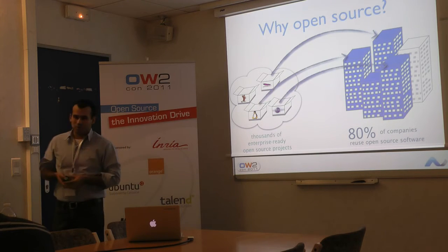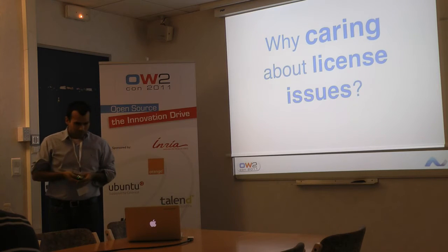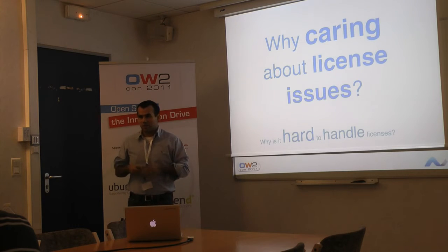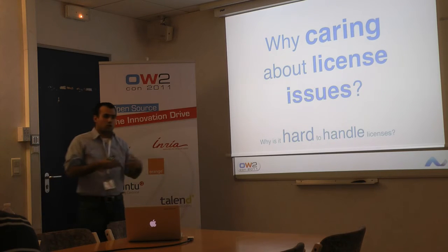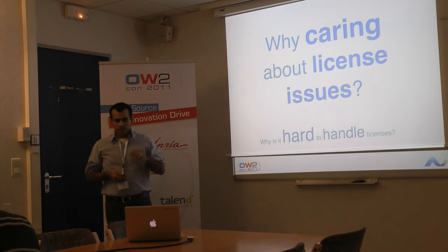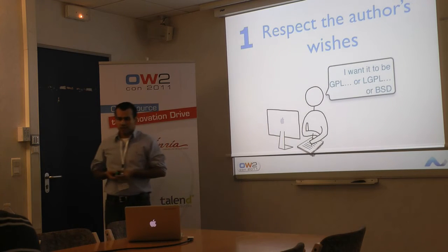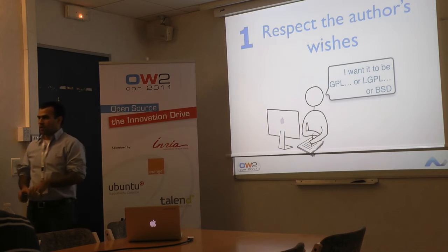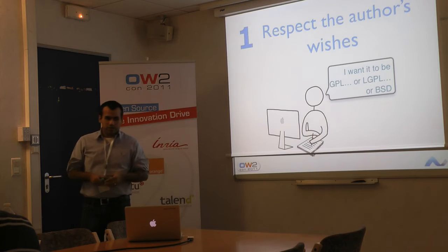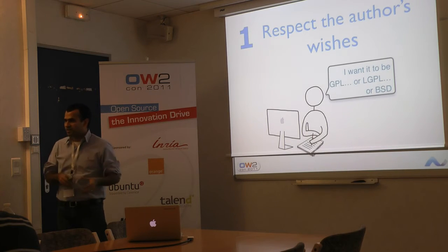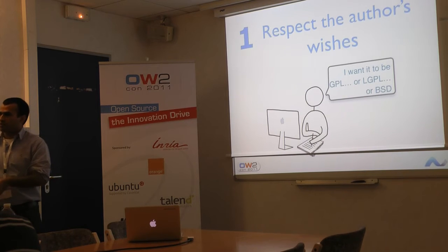So you can ask yourself: why should you care about open source licenses and license issues in particular? And why is it hard to handle those licenses in an industrial setting? There are many reasons. The first one is that you need to respect the author's wishes — what the author said when he wrote the code, when a team or organization said, 'I want it to be GPL, LGPL, BSD, MIT, whatever.' The author cared enough to give their software creation a license.